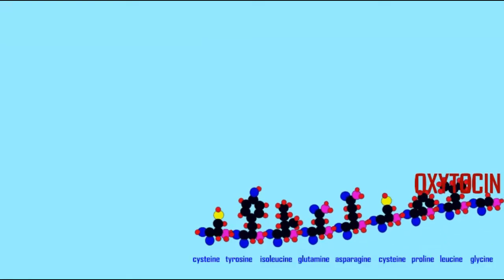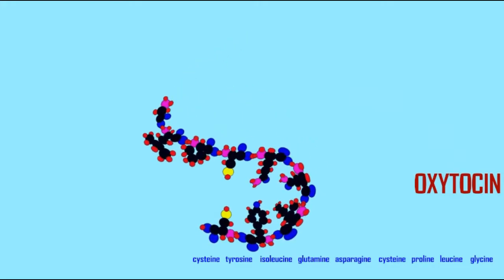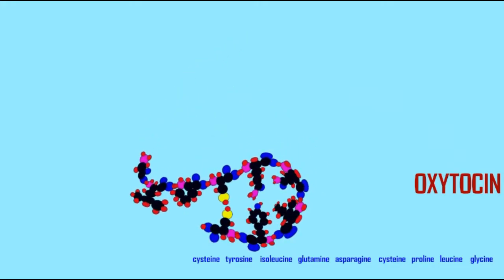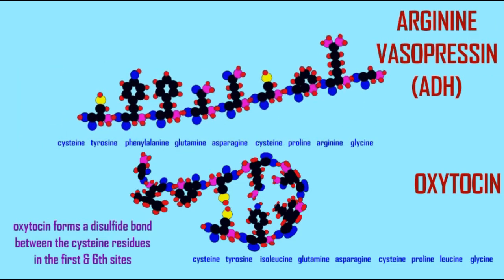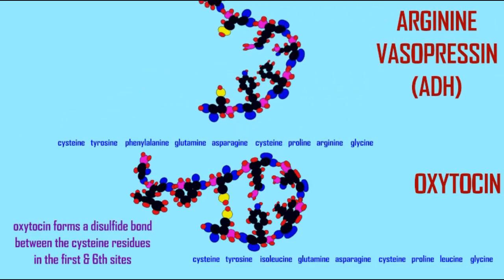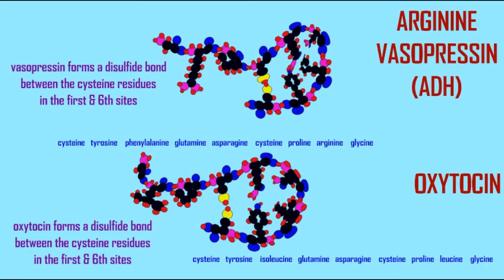Both of these neuropeptides have cysteine amino acids in the first and sixth sites in the nine amino acid peptide. These cysteine amino acids then form a disulfide bond, which gives these neuropeptides their shape.